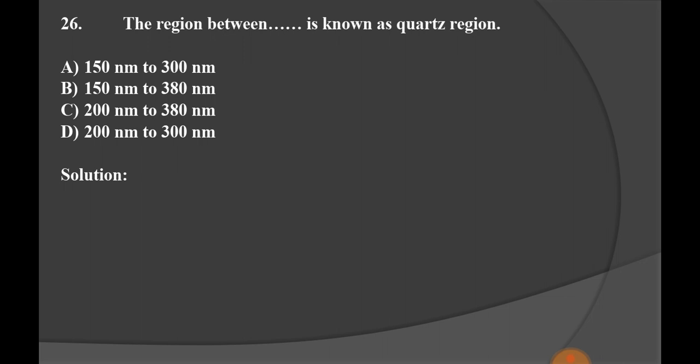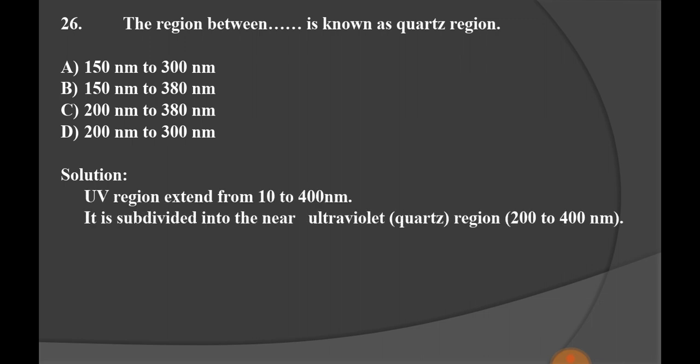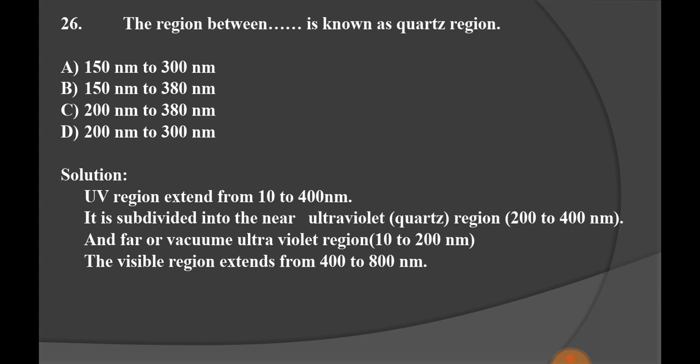The region between blank is known as the coarse region: Option A 150 to 300 nanometer, Option B 150 to 380 nanometer, Option C 200 to 380 nanometer, and Option D 200 to 300 nanometer. You know that UV region extends from 10 to 400 nanometer, and it is further subdivided into the near UV, that is coarse region, which lies between 200 to 400 nanometer, and the vacuum UV region lies between 10 to 200 nanometer. Visible region extends from 400 to 800 nanometer. The coarse region lies between 200 to 380. Option C is the right option.